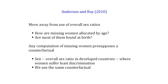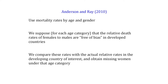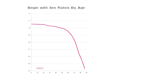What we did was move away from those overall sex ratios, sticking to the same counterfactual that developed countries are the reference. To move away from sex ratios, we moved into using data on mortality rates by age. We're supposing for each age category that the relative death rates for females to males is free of bias in the developed country, and then we compare this to the actual death rates. That's exactly what Sen did.